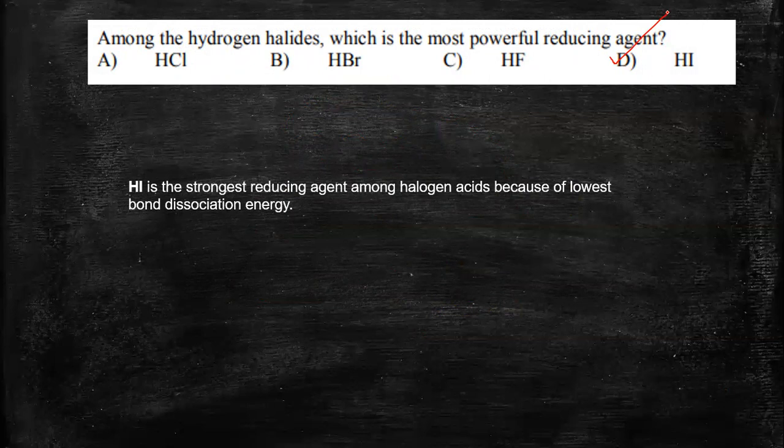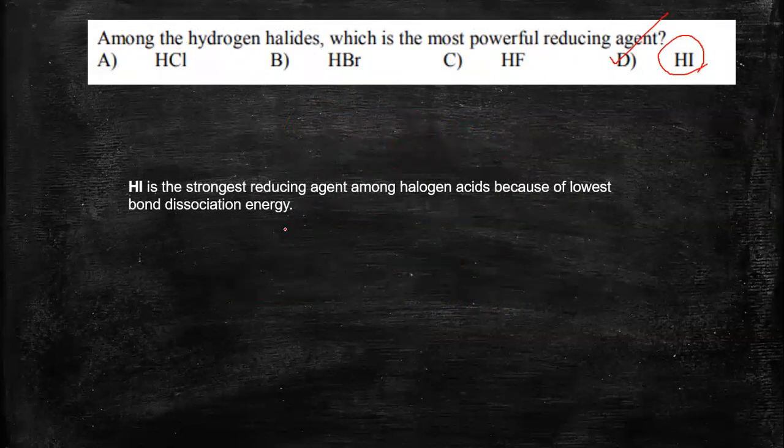It is because of the size. If you look at the size, the largest size is HI, and it is easier to remove it. And I minus is a really good leaving group. So all these factors together make the bond dissociation energy to be extremely small. And thereby, this is becoming a strong reducing agent.